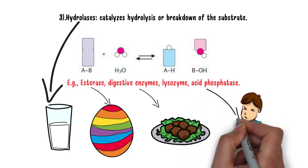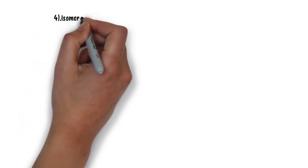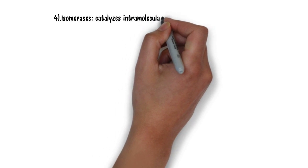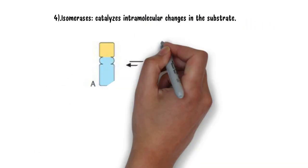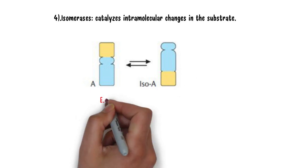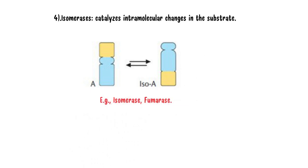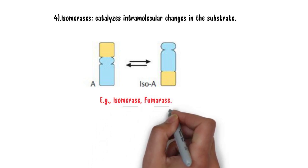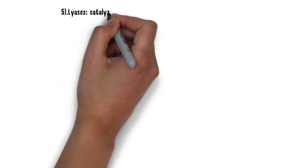The next enzyme category is isomerases. As you all know, isomerases are enzymes that catalyze intramolecular changes in the substrate. The examples are isomerase and fumarase. These are very simple to remember because both words contain 'marase,' which is common.